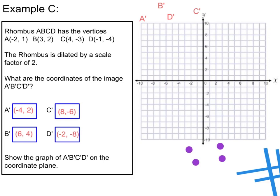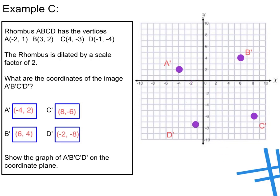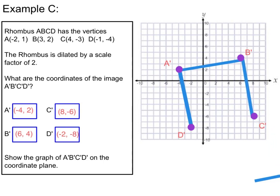Now I'll plot the points on the coordinate plane. A prime is at negative 4, 2. B prime is at 6, positive 4. C prime is at 8, negative 6. And D prime is at negative 2, negative 8. It looks like we've made ourselves a nice rhombus. Go ahead and take out your straight edge or ruler and connect all the points together. Make sure that your answers match mine before moving on.